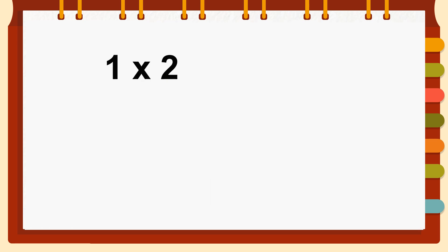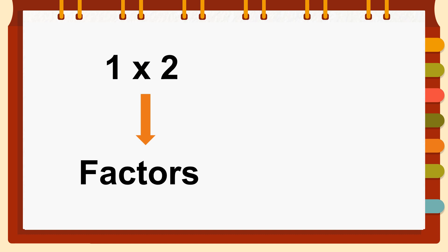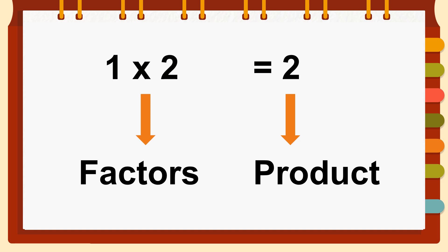The numbers in a multiplication problem have special names. The numbers we multiply are called factors, and the answers are called products. You can remember this easily because you go to stores to buy products, and products come from a factory — and that sounds like factors!